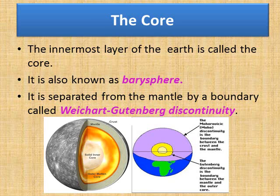The innermost layer of the earth is called the core, also known as the barisphere (B-A-R-Y-S-P-H-E-R-E). It is separated from the mantle by a boundary called the Weichert-Gutenberg discontinuity. So we have two terms: the Mohorovicic discontinuity, which is the boundary between the crust and the mantle, and the Weichert-Gutenberg discontinuity, which is the boundary between the mantle and the outer core.